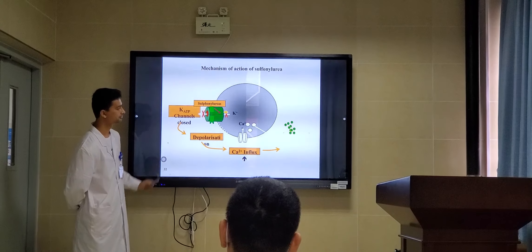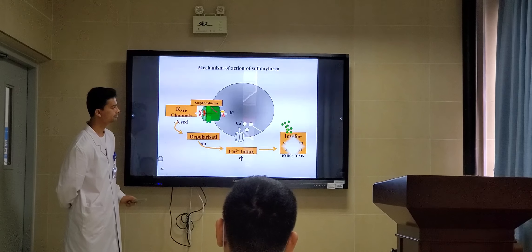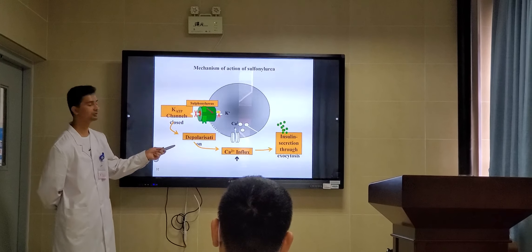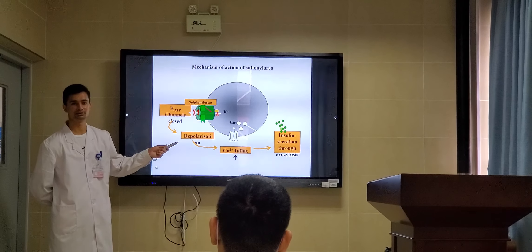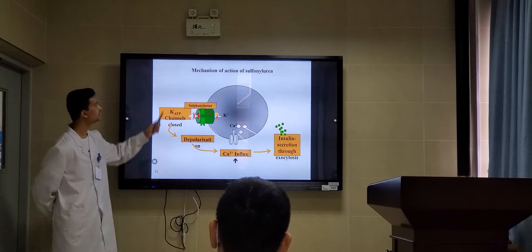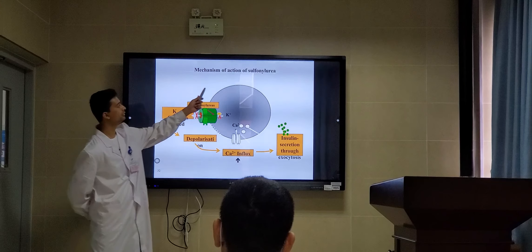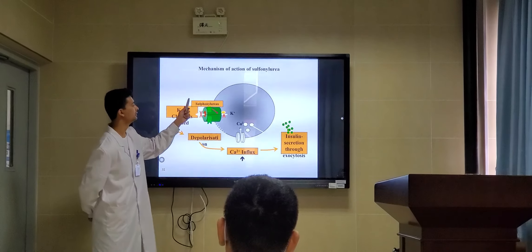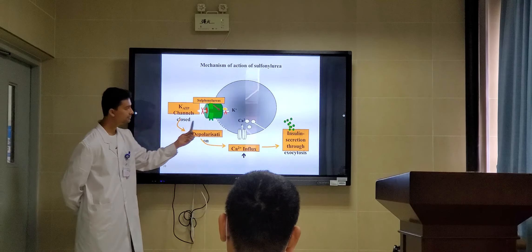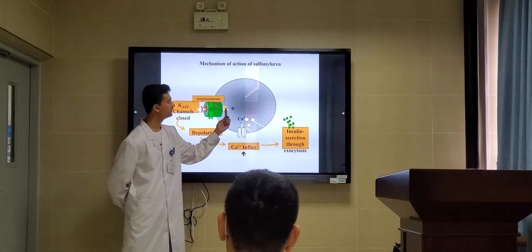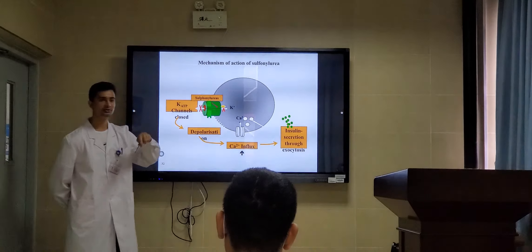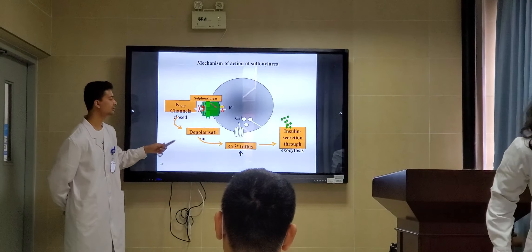Insulin secretion occurs through exocytosis. That's how sulfonylureas act on the potassium channel and help the cell to release insulin and reduce blood glucose levels.